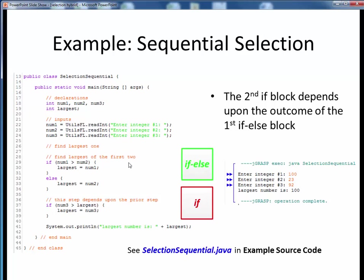Note that we need to know the outcome of the first if-else before we can proceed to the second if. Over here on the right, we see some sample output for three random input values, and the result is correctly calculated as being the first value, 100. To see the internal execution of this code, please take a moment to pause this video and view the short code walkthrough video for SelectionSequential.java, which you'll find in the usual place. Open up this file in JGrasp to follow along. Come back to this video when you are finished.